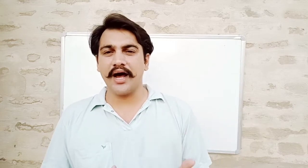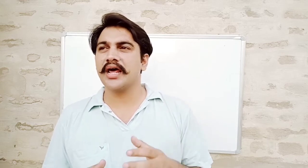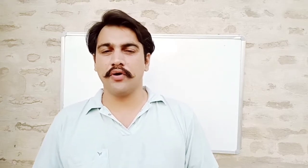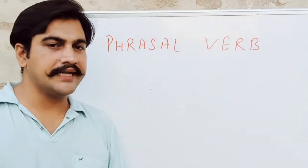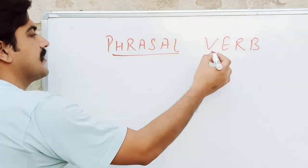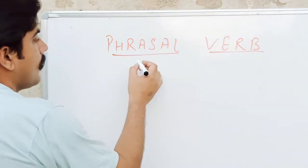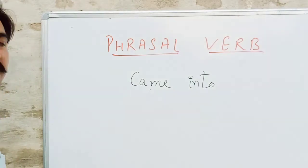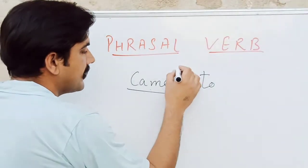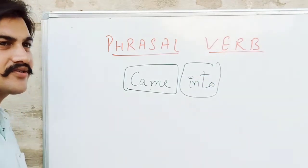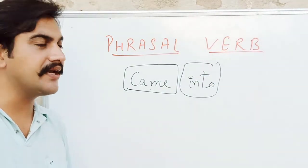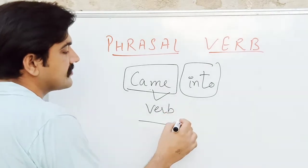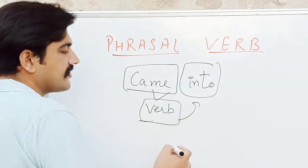We'll be using the board and I'll discuss the different kinds of phrasal verbs. A phrasal verb is a combination of two words — one is phrasal, another is verb. For example, 'came into' is a phrasal verb. It is a combination of two words and when there is a combination of two words that does not have a complete meaning, we call it a phrase. If the head word is the verb, then it is a phrasal verb.